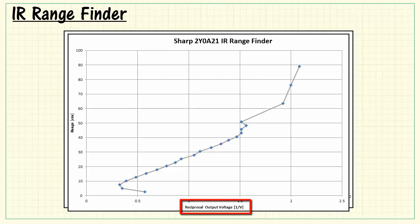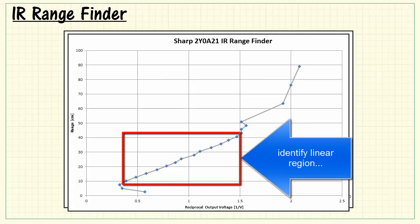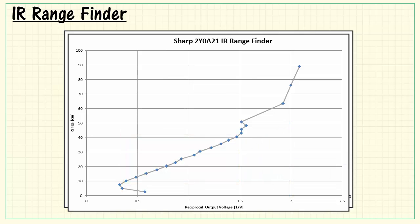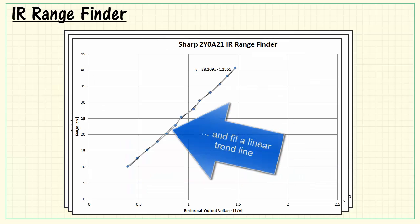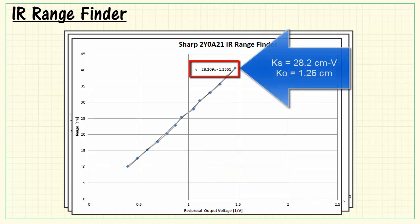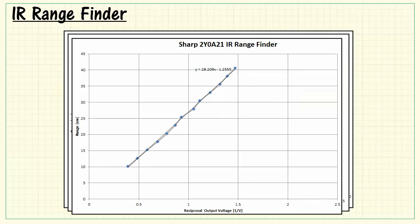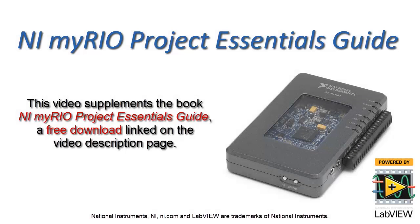Now I'm plotting that same voltage, but in reciprocal form, and then plotting range versus that reciprocal voltage. Here you can see a nice linear region showing up. And then I extract only that piece and fit a linear trend line. Trend line is indicated right here, and that tells us we have 28.2 centimeter volts for the scale factor, and 1.26 centimeters for the offset.